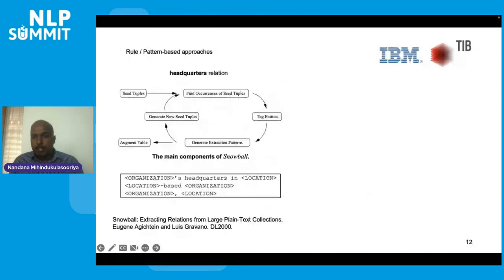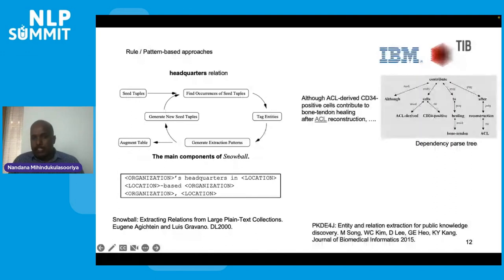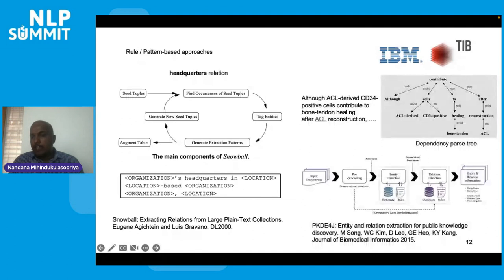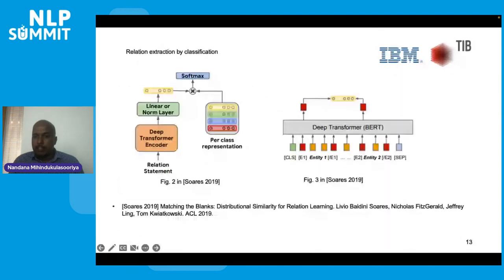Early linguistic pattern-based approaches to identifying relations are brittle — finding all different linguistic variations of how a relationship is written is nearly impossible. Later approaches used higher-level representations such as dependency trees to identify relations, though defining rules on top of dependency trees remains tedious. Most NLP tasks got a big boost from deep neural networks based on transformer architectures, and relation extraction is no exception. In 2019, Soares et al. showed that relation extraction can be done by training neural networks to encode both relations and entities in text, then finding similarity between those representations to identify relations — an approach that scales to large numbers of relations.